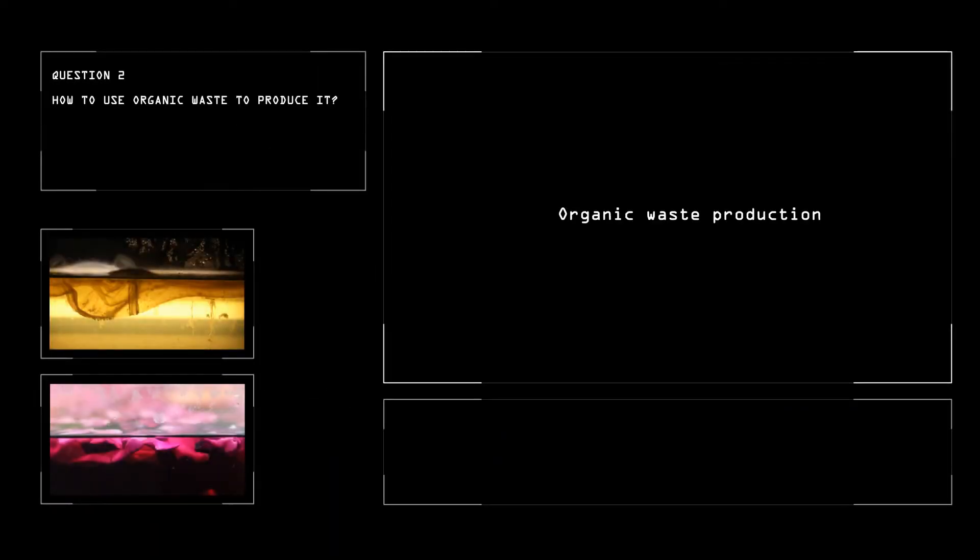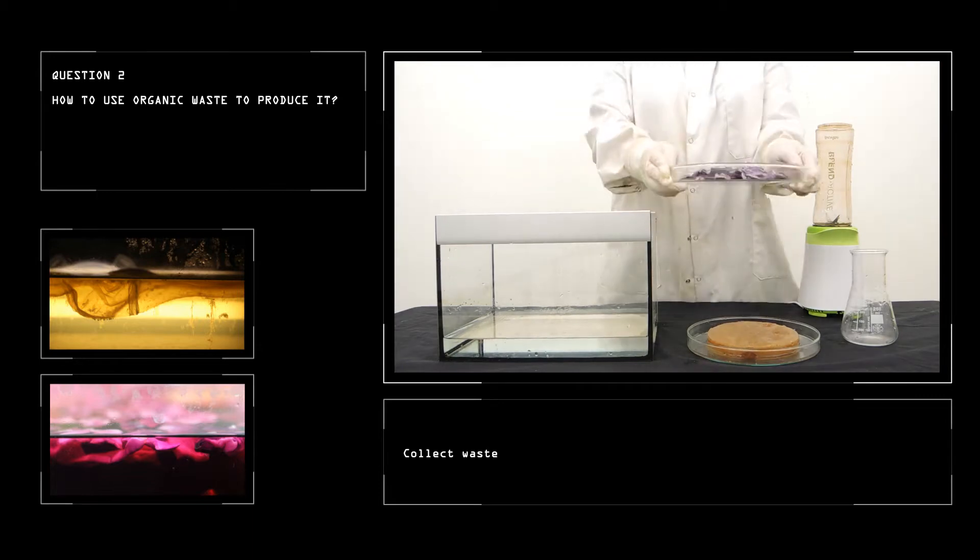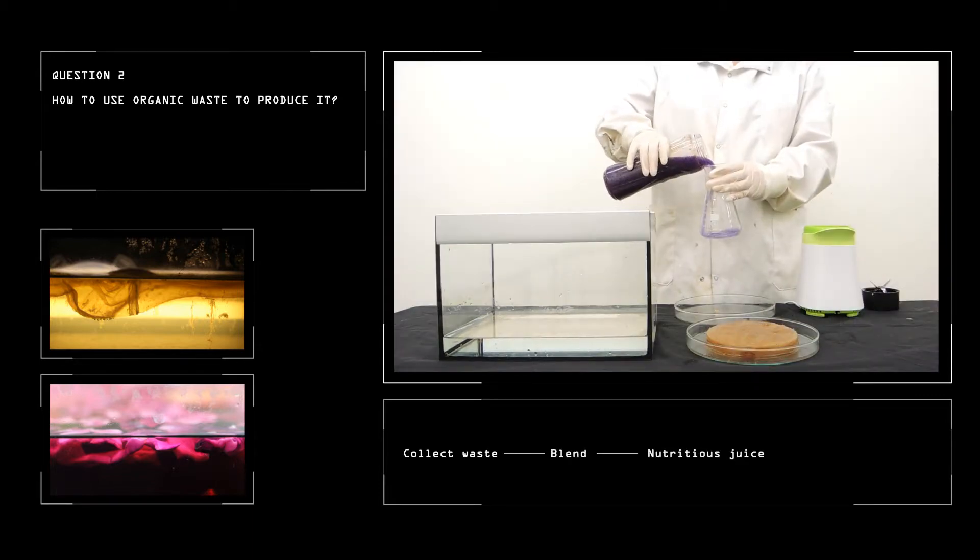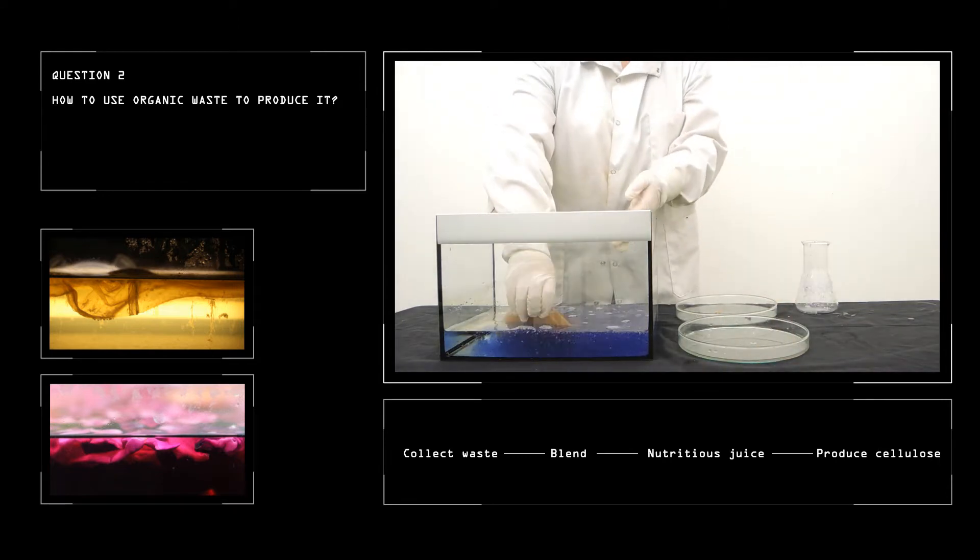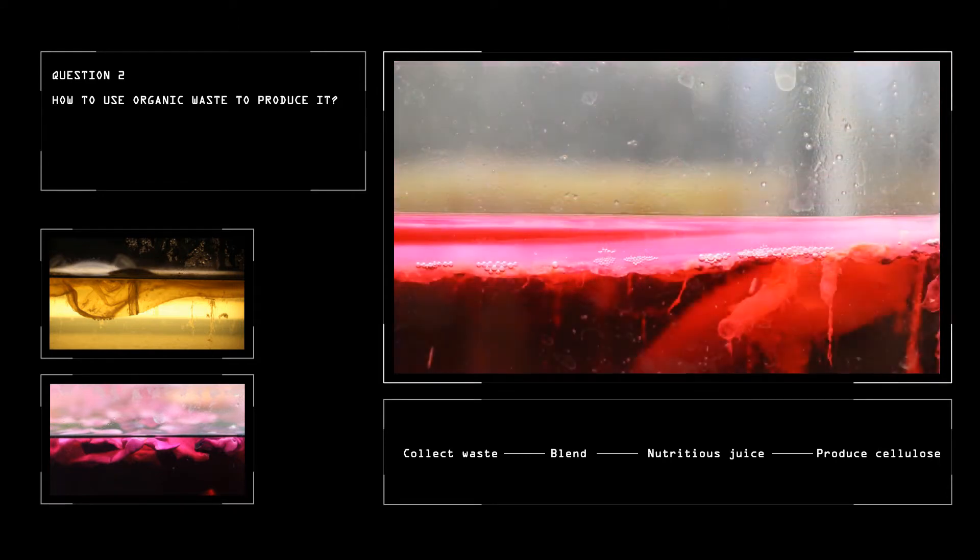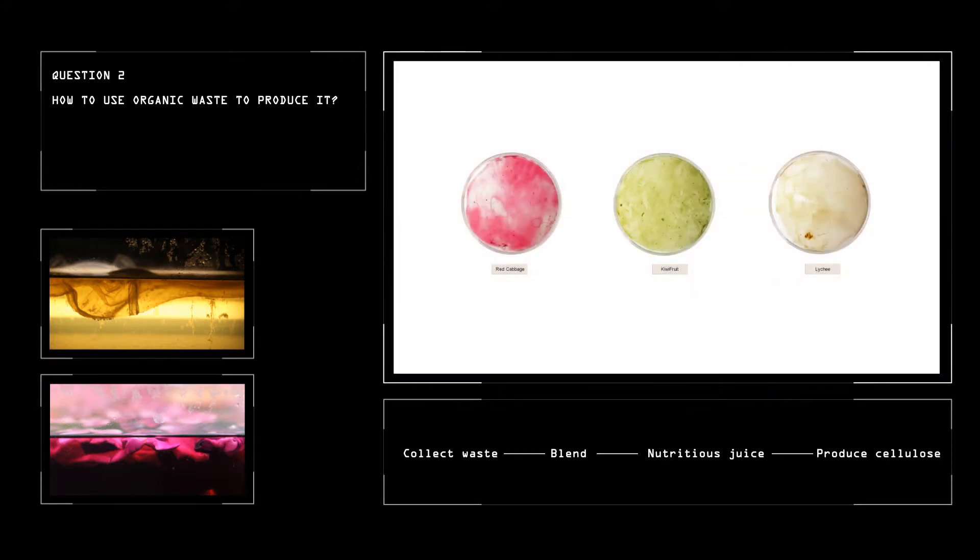The next is organic waste experiment, which used purple cabbage instead of sugar to cultivate cellulose, and also we tried pineapple and kiwi. This experiment proves that organic waste can be used to produce Microbiosellulose.